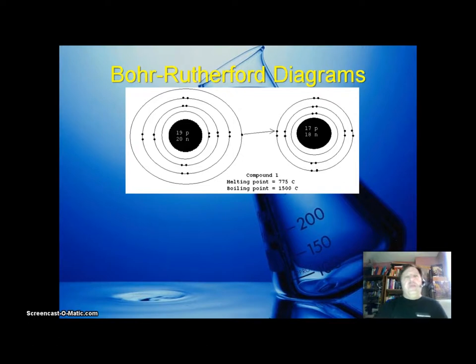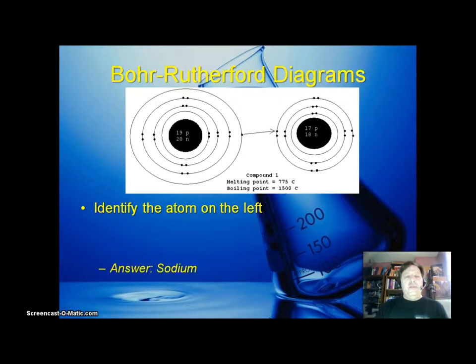A Bohr-Rutherford diagram. Here we have two Bohr-Rutherford diagrams of two different elements. Notice that it seems to be illustrating how one element gives up an electron to fill out the octet of another element. For one thing, identify the atom on the left. That's the element here. You're going to need a periodic table for this, so you might want to pause the video while you go get your periodic table. The answer is sodium.